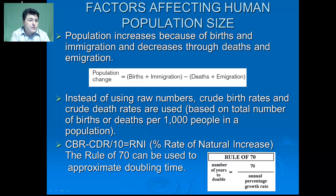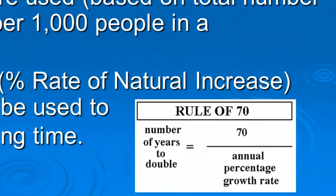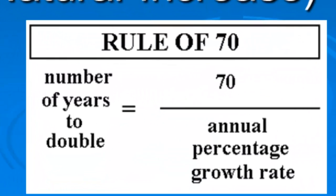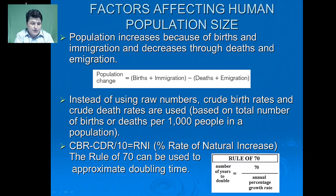We can use this percent rate of increase to figure out the approximate number of years it will take for our population to double. The number of years to double equals 70 divided by the percent growth rate — also known as the rule of 70. With a 1.2% growth rate currently worldwide, 70 divided by 1.2 equals about 58 years.